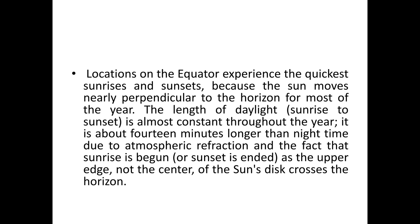Locations on the equator experience the quickest sunrises and sunsets, because the sun moves nearly perpendicular to the horizon for most of the year. The length of daylight, sunrise to sunset, is almost constant throughout the year. It is about 14 minutes longer than nighttime due to atmospheric refraction and the fact that sunrise begins and sunset ends as the upper edge, not the center, of the sun's disk crosses the horizon.